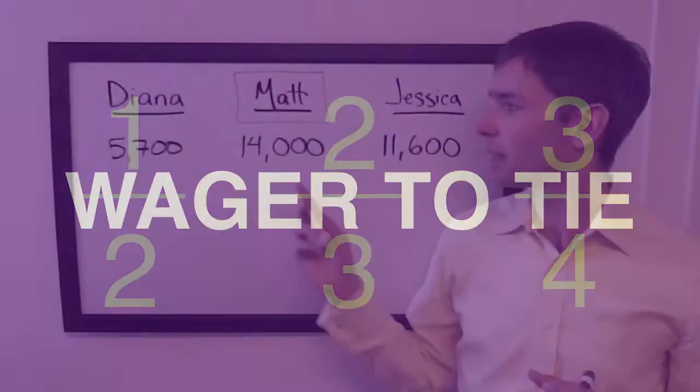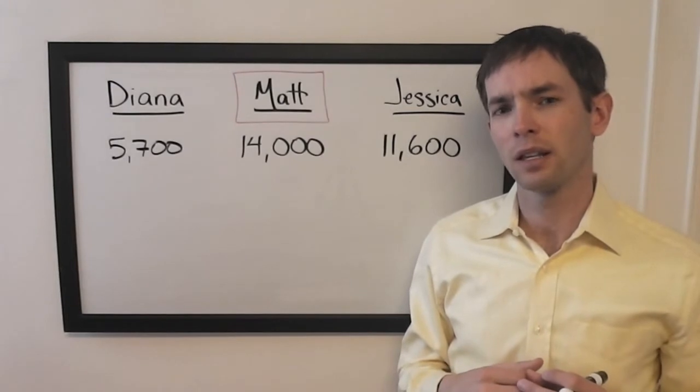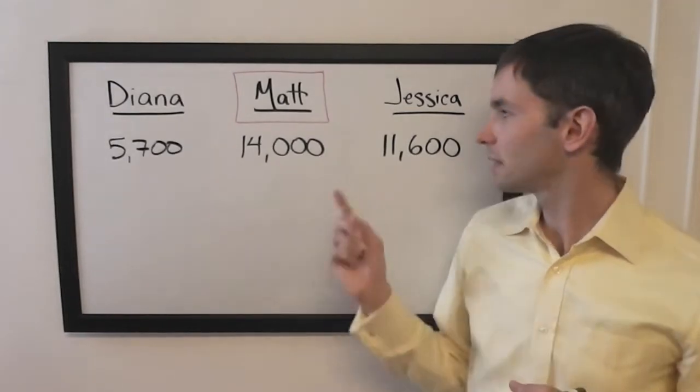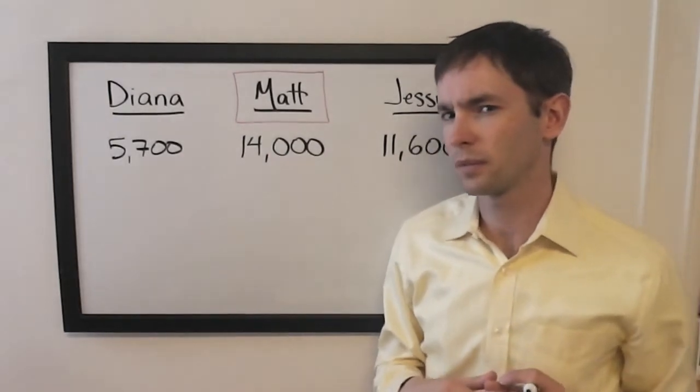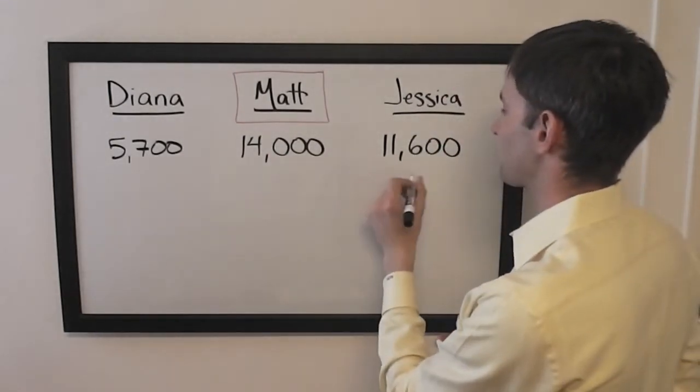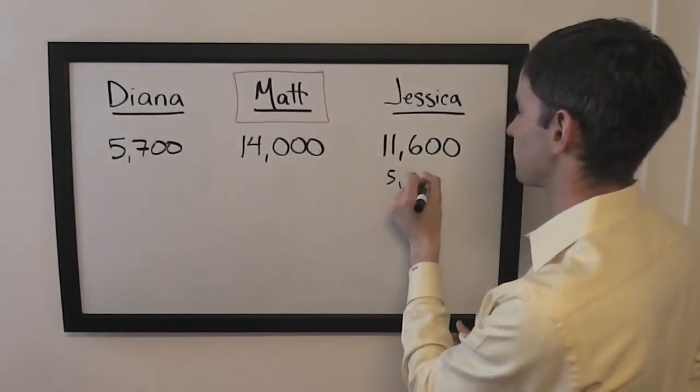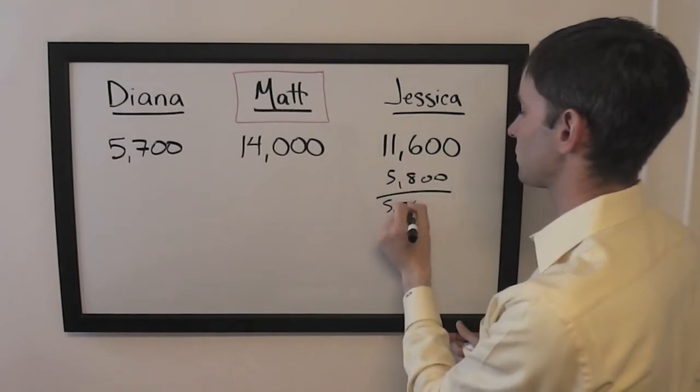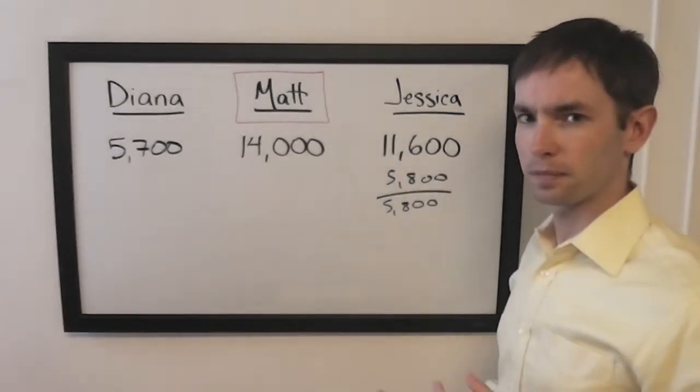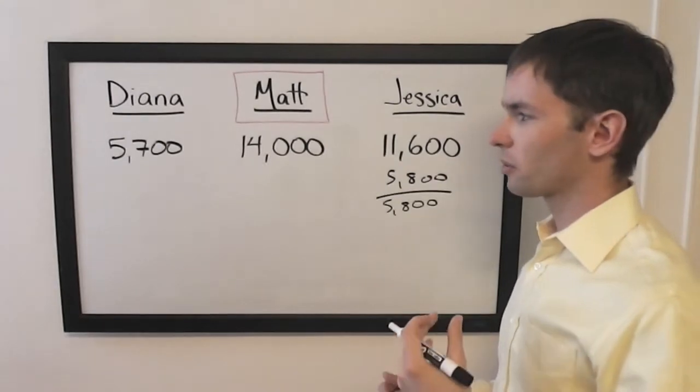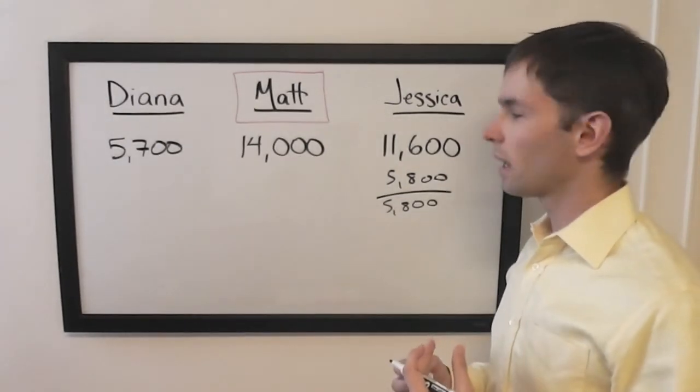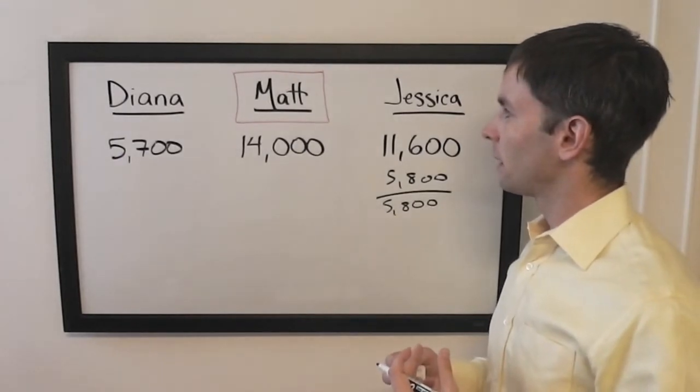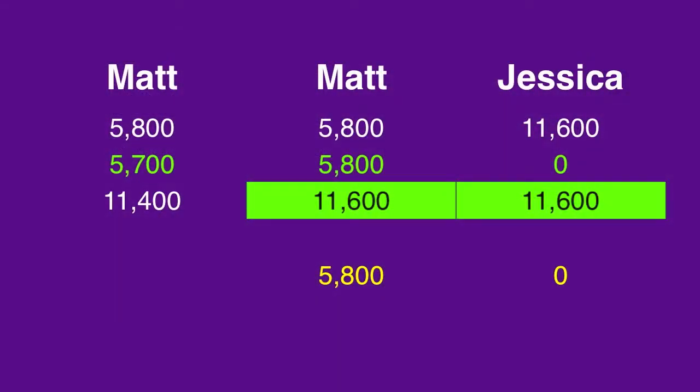What I think Matt should do here is wager for a tie. If he gets it wrong, he'll have exactly half of Jessica's score. I'll show you why in a second. Half of Jessica's score is 5,800. So Matt should wager such that if he gets it wrong, he has this backstop where he'll be left with 5,800. And what will happen there is Jessica will be forced to wager zero, and Matt will control his own destiny.